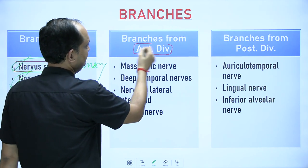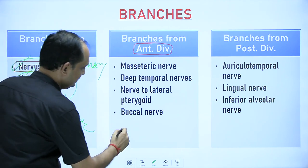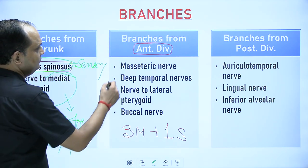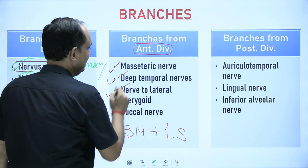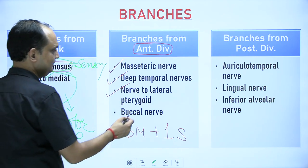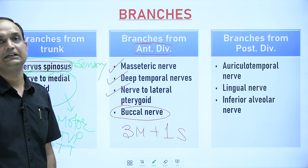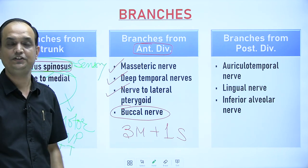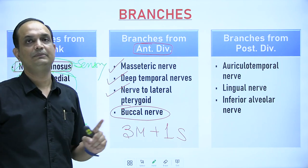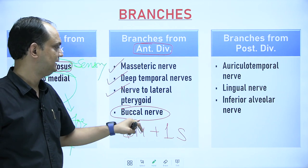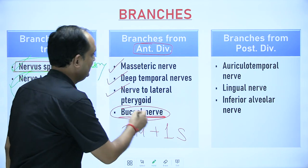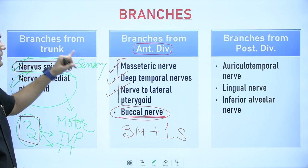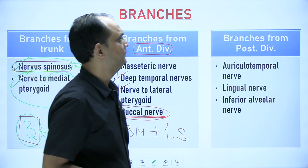From the anterior division there are three motor branches and one sensory branch. The three motor branches supply the masseter muscle, temporalis muscle, and lateral pterygoid muscle. The one sensory branch is the buccal nerve, which supplies the mucosa on the inner side of the buccinator muscle. Note that the buccinator muscle itself is supplied by the facial nerve, but the mucosa on its inner side is supplied by the buccal nerve of the anterior division.